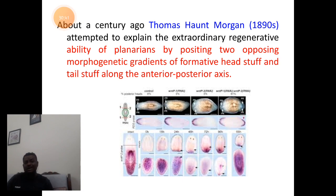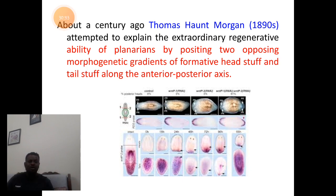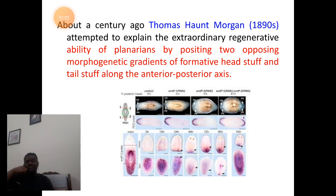It was Thomas Hunt Morgan in the 1890s who also explained the axial gradient variation of regeneration along the anteroposterior axis. Remember, it is not only Child Manning — T.H. Morgan also explained the concept of axial gradient theory. Morgan calls the process of regeneration as morphogenetic gradient, while Child calls it metabolic gradient. Morgan calls it morphogenetic gradient because the anterior head gets formed first, followed by the tail during regeneration along the anteroposterior axis.